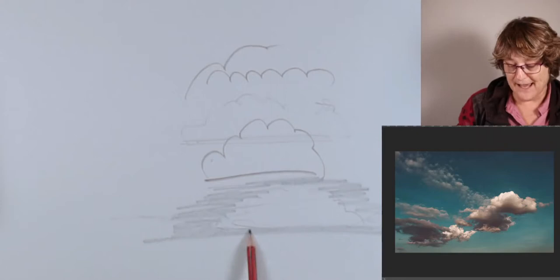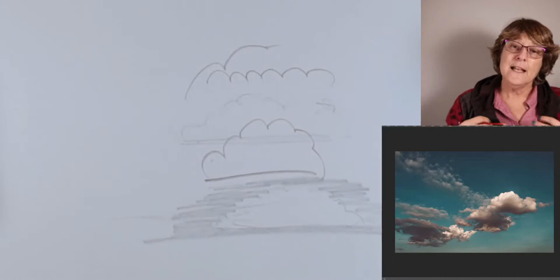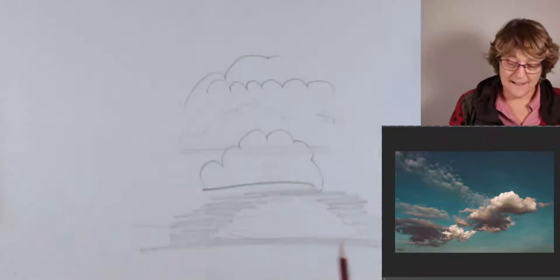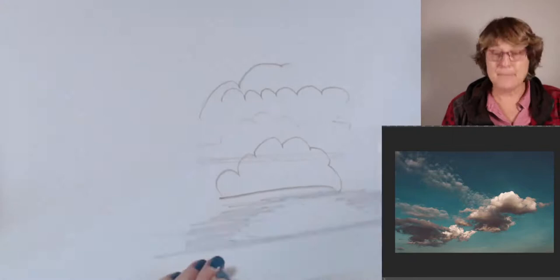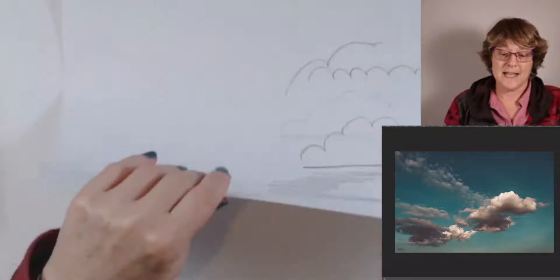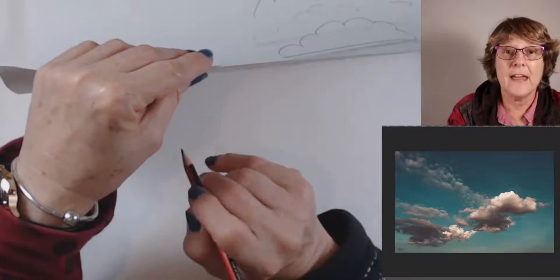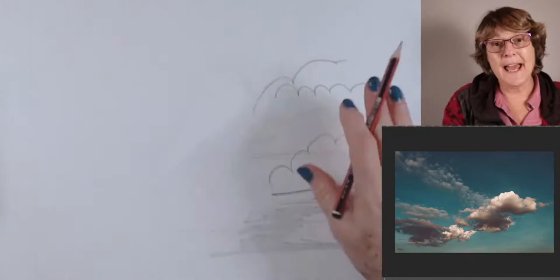The aha moment that I had looking at these clouds was: Karen, they're not two-dimensional. Like nothing else in the world, nothing is two-dimensional in the world. So even though we call this piece of paper two-dimensional because it's got height and it's got width, the actual depth of this paper is that fraction of a millimeter there. Everything's got three dimensions.